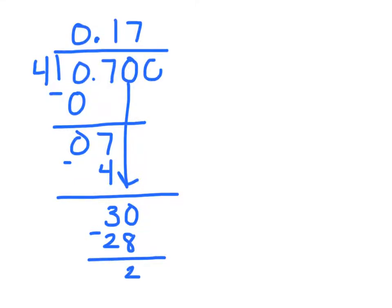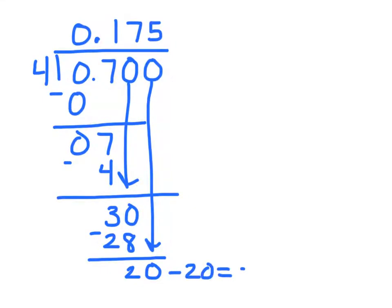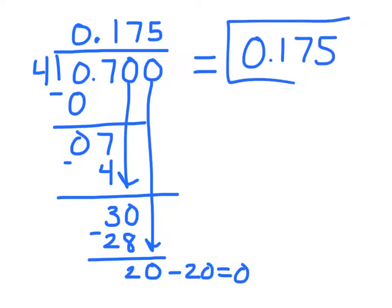Let's try again to see if we can get rid of that remainder. How many times does 4 go into 20? It goes in 5 times. 5 times 4 is 20, which leaves us with no remainder. So 7 tenths divided by 4 equals 175 thousandths.